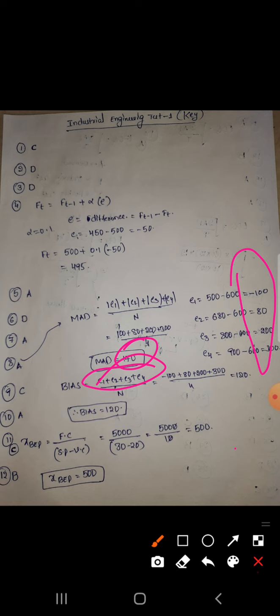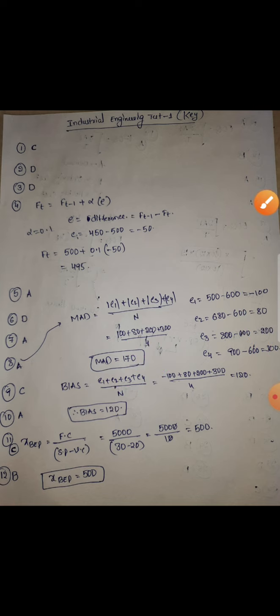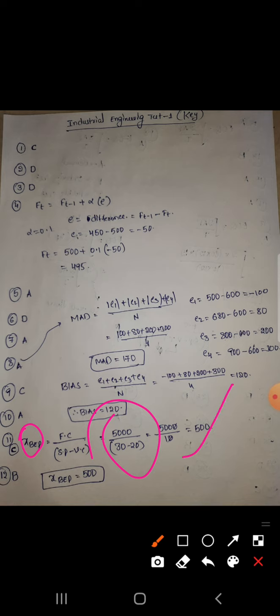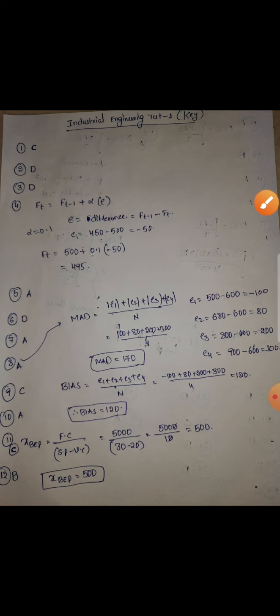Ninth one is C, that is n minus 1 periods. Tenth one is forecast overheads: prime cost plus forecast overheads. Eleventh, they are asking break-even point sales, that is fixed cost by selling price minus variable price. You substitute that, you get 500 as the correct answer. Remember the formula.